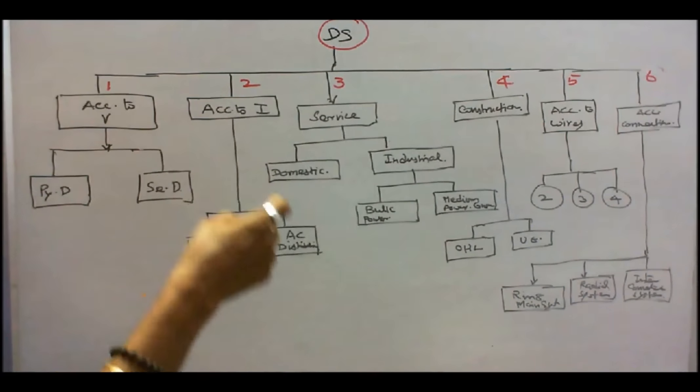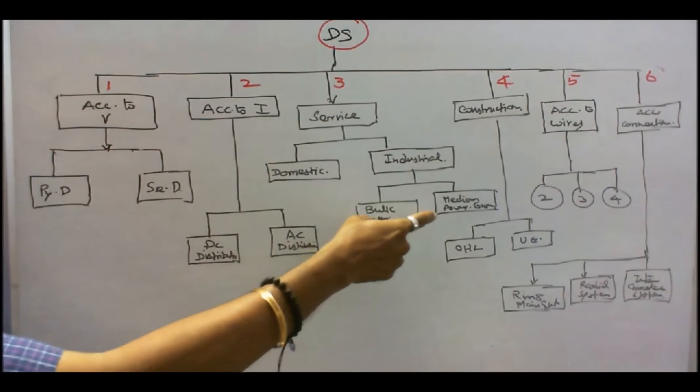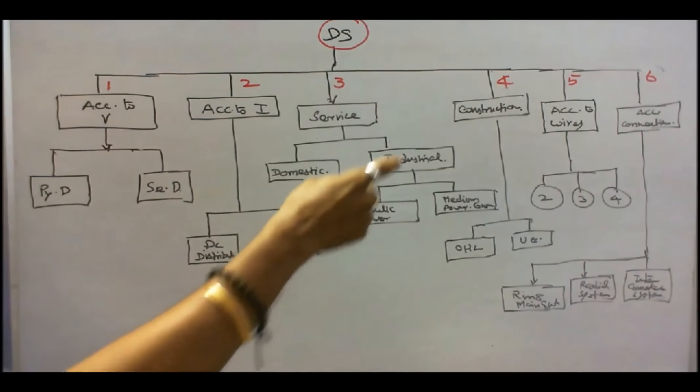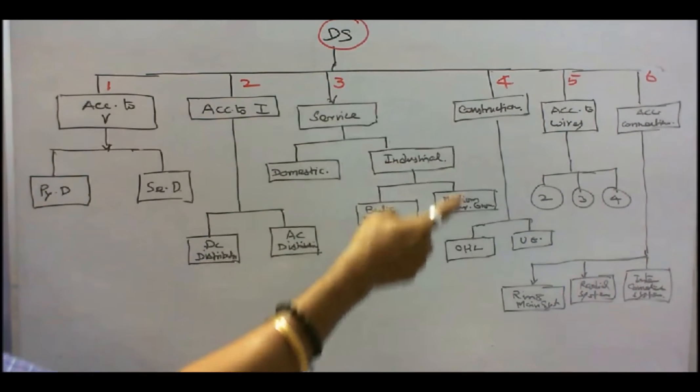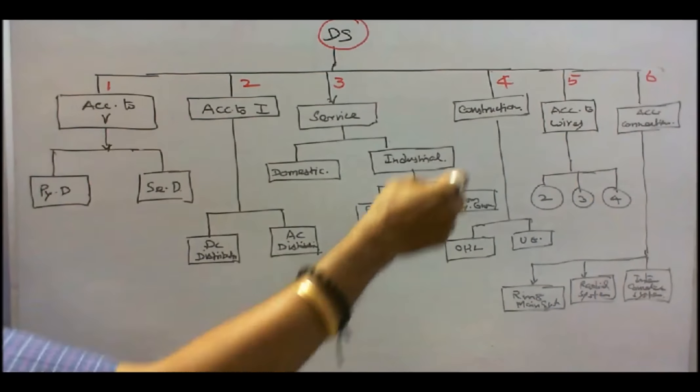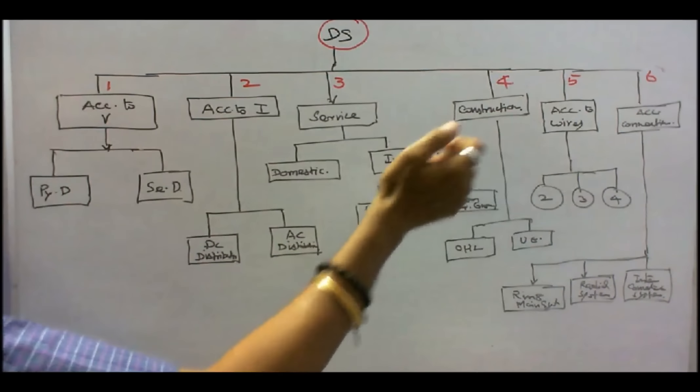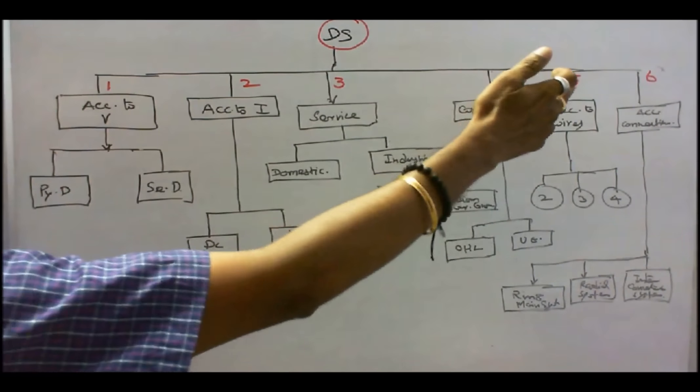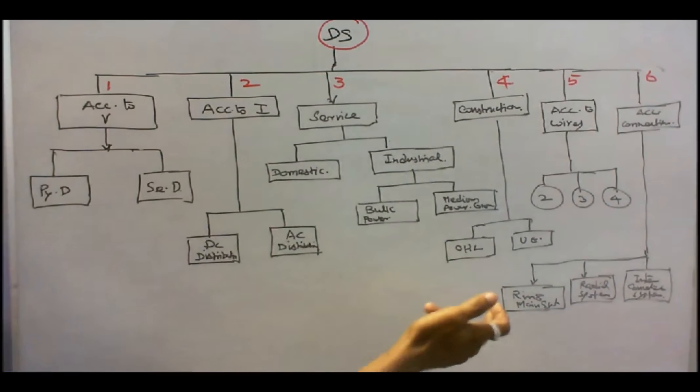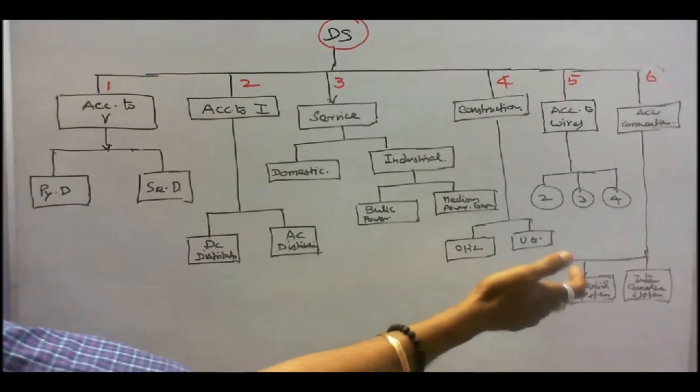In the case of industrial, bulk consumer or medium power consumers. Number four, according to the connection, overhead line or underground cables. Number five, according to the wires, two wire system, three wire system or four wire system. Number six, according to the connection, ring line system, radial system, interconnected system.